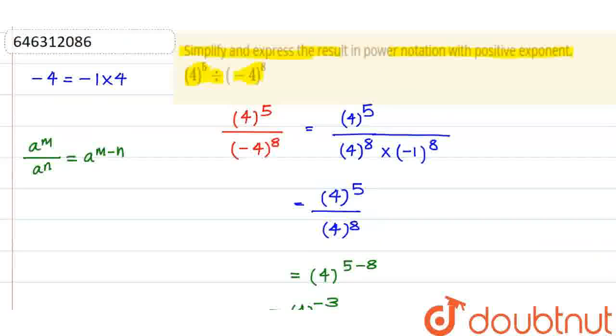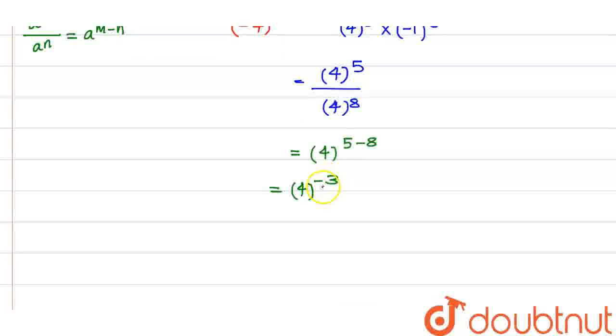Now in our question it is given that we need to write the answer in positive exponent. Now since here exponent is minus 3 so I can write this thing as in our indices property the property is given as if it is given like a to the power of minus m so that is 1 upon a to the power of m. So that is 1 upon 4 to the power of 3.